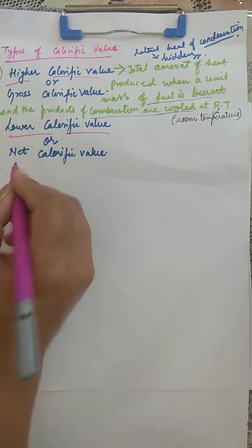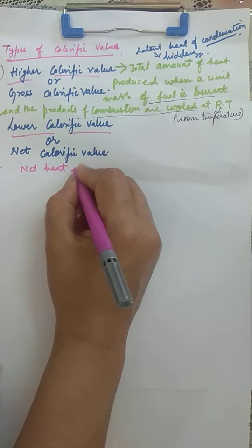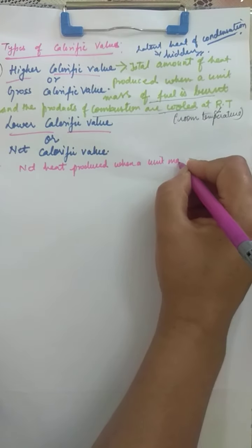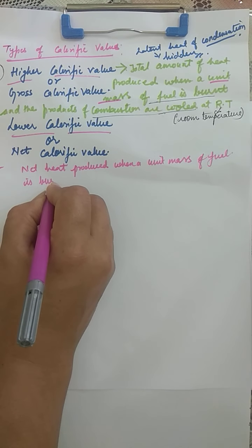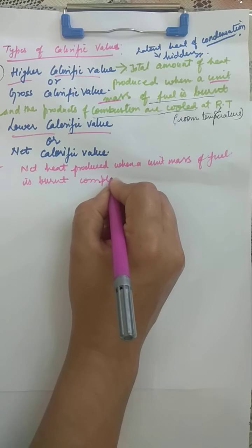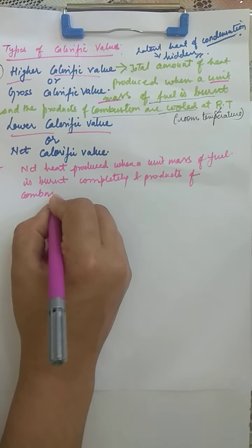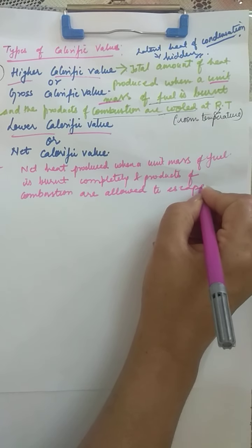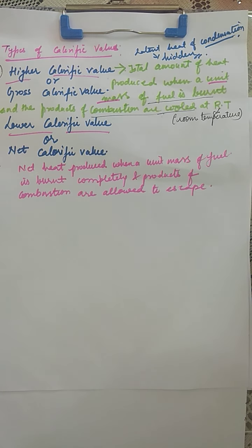Net calorific value is only the net heat produced when a unit mass, or unit volume, of fuel is burned completely, and the products of combustion are allowed to escape. In high calorific value, the products of combustion are not allowed to escape — they are cooled and that heat is added to it.